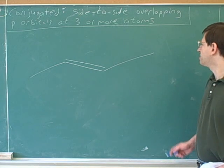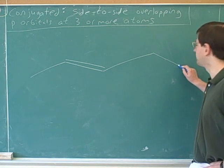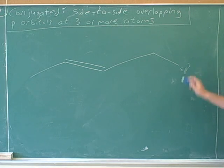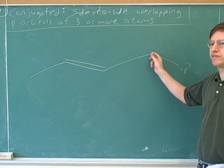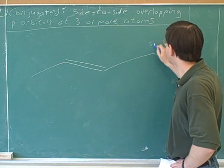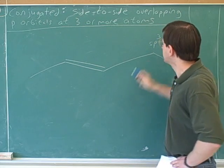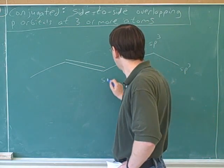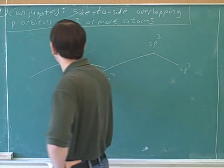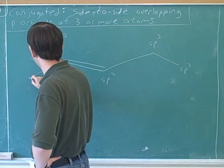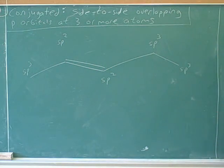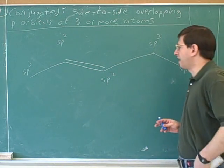What is the hybridization of this carbon? SP3. That's right — this is just a normal SP3 carbon. What's the hybridization of this carbon? SP3. Good. What's the hybridization of this carbon? SP2. Good. And this one? SP2. And this one? SP3. Good. That's good knowledge of hybridization.